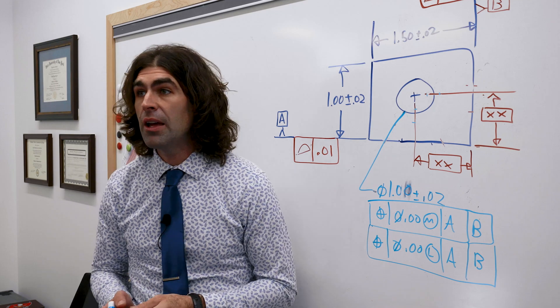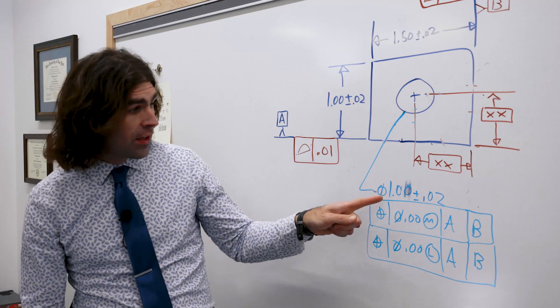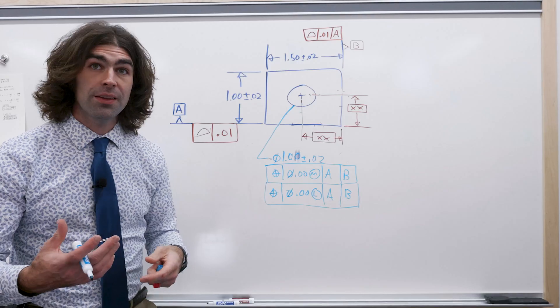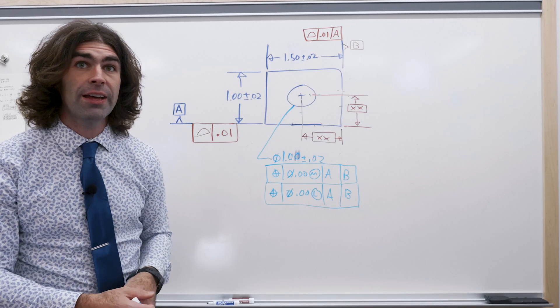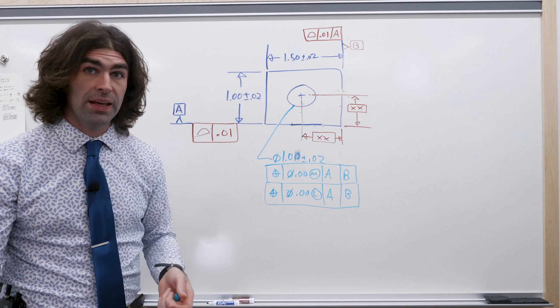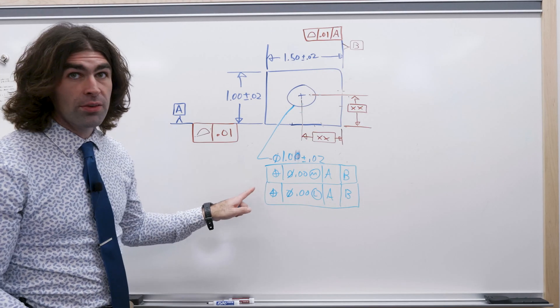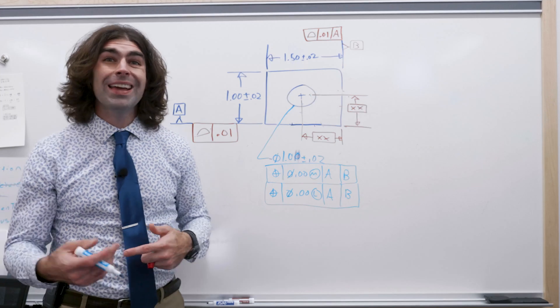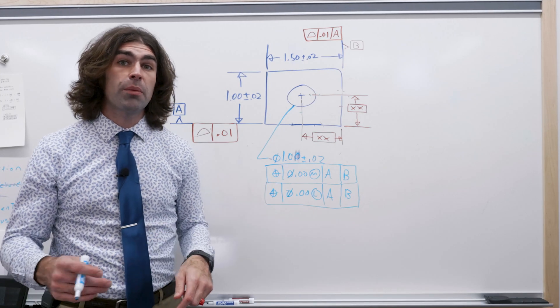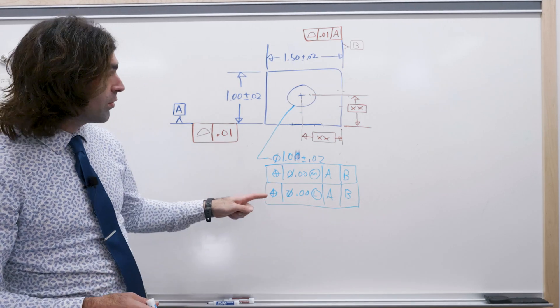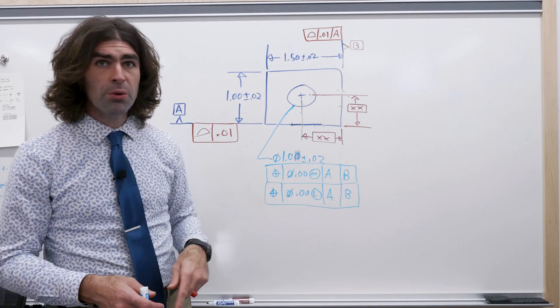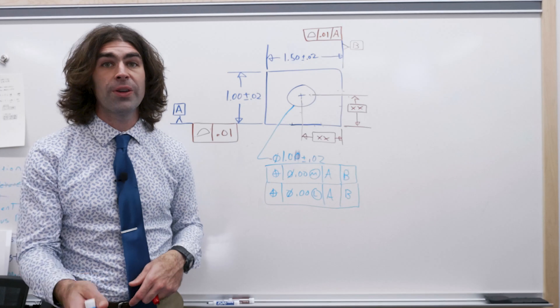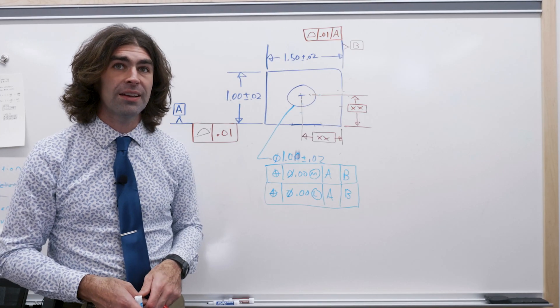So you're establishing a boundary in this case at 1.02 and a boundary at 0.98 that the surface of the hole can't violate, so you get the same thing. Now you're never going to see this on a drawing because it reduces tolerance, but effectively it means the same thing as that profile tolerance. And when you use zero at MMC, you do get an actual boundary. You don't necessarily have to use the actual mating envelope.